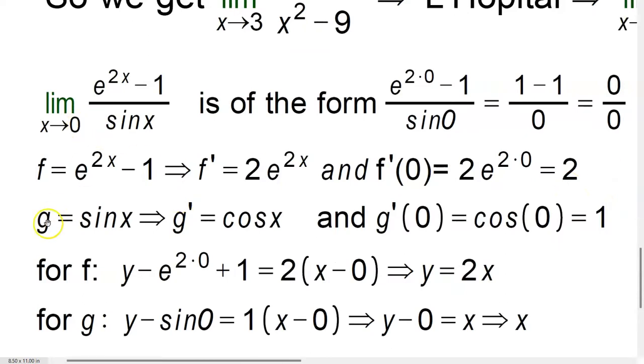And then you do that for the bottom. So the bottom is g and it's sine x in our case. g prime of x is cosine x, and g prime of 0 is cosine of 0, which is 1. So 2 is the slope at 0 of the top, and 1 is the slope at 0 of the bottom here.